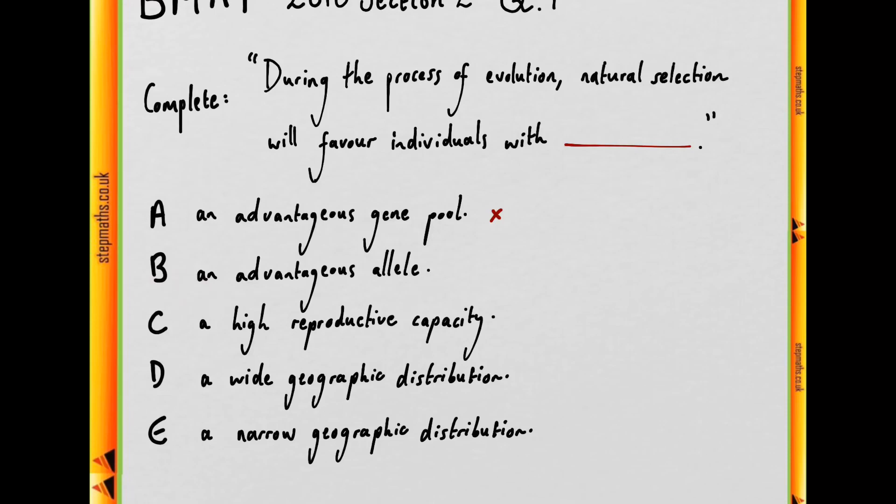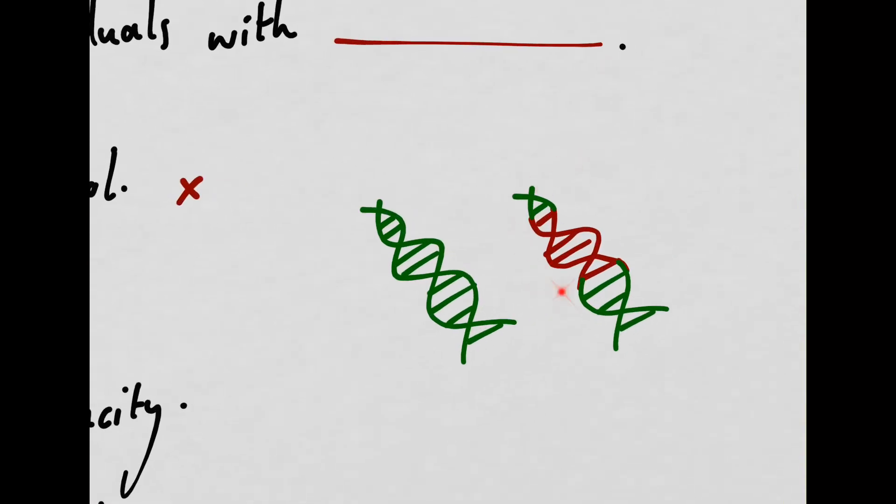Moving on to B: Does natural selection favor individuals with an advantageous allele? Well, this is correct. Alleles are just gene variants. There are more than one variant of a particular gene within the population due to genetic variation present in the population.